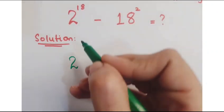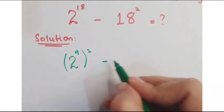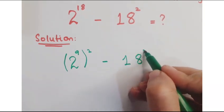First of all, you can write 2 to the power 18 as 2 to the power 9 whole squared minus 18 squared.